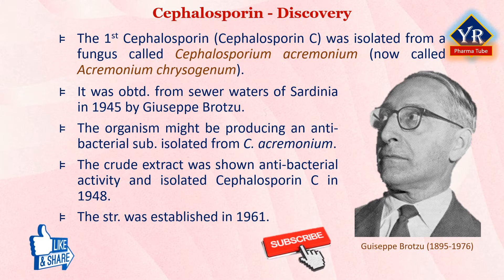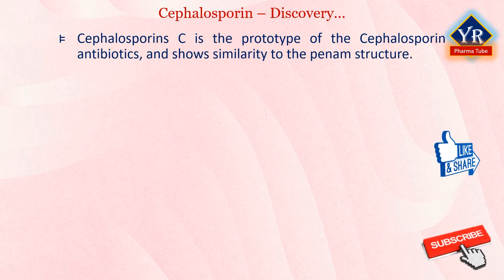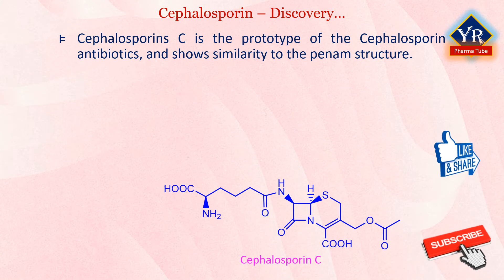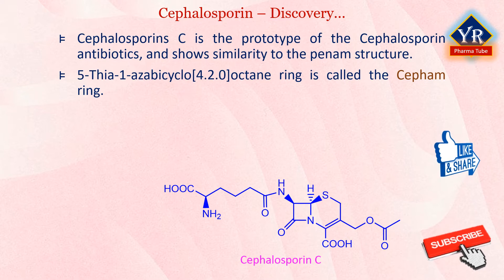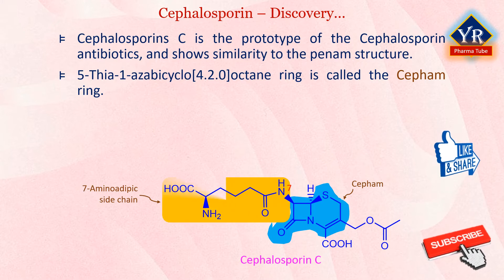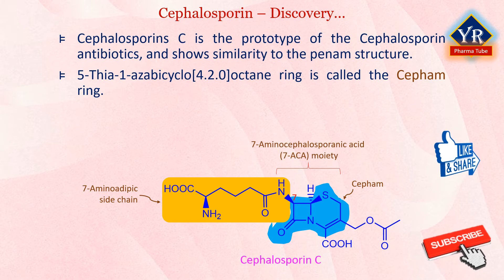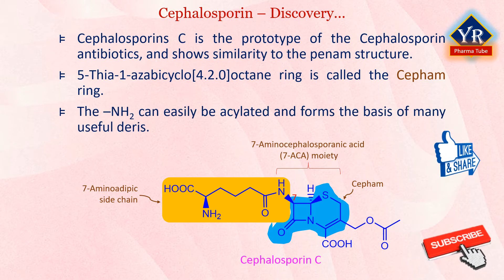The crude extract from this organism was shown to have antibacterial activity, and Cephalosporin C was isolated in 1948. The structure of Cephalosporin C was established by X-ray crystallography in 1961. Cephalosporin C is a prototype of these cephalosporin antibiotics and shows close similarity to the penam structure. The 5-thia-1-azabicyclo-[4.2.0]-octane ring system is called the Cepham ring. The parent compound carries the aminoadipate side chain, which can be cleaved to supply 7-aminocephalosporanic acid, abbreviated 7-ACA. This amine can easily be acylated and thus forms the basis of many useful derivatives.